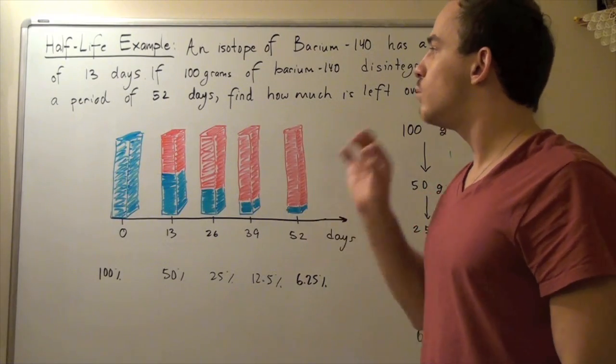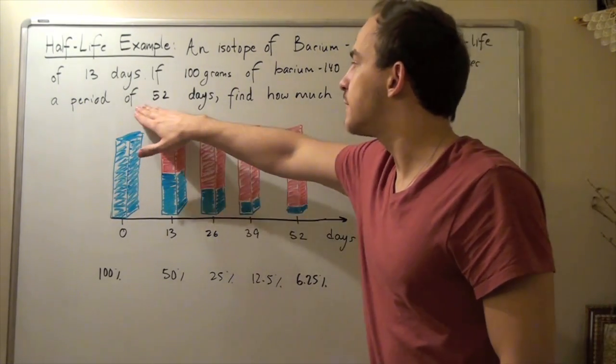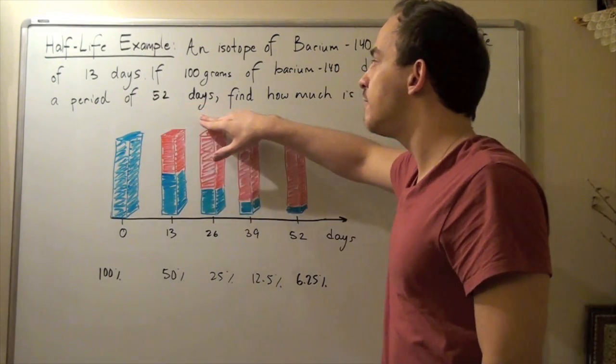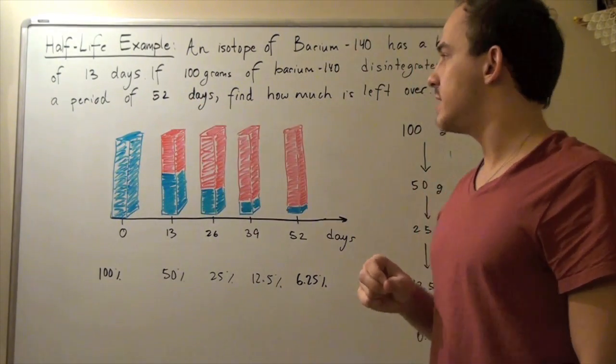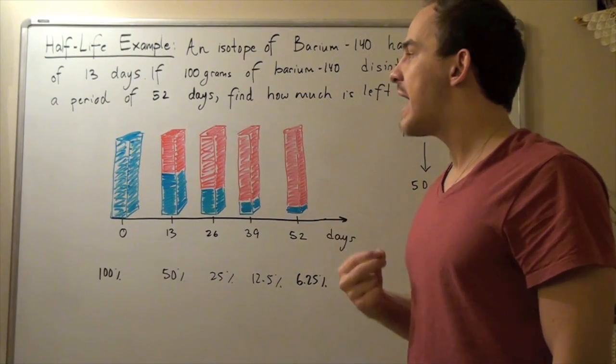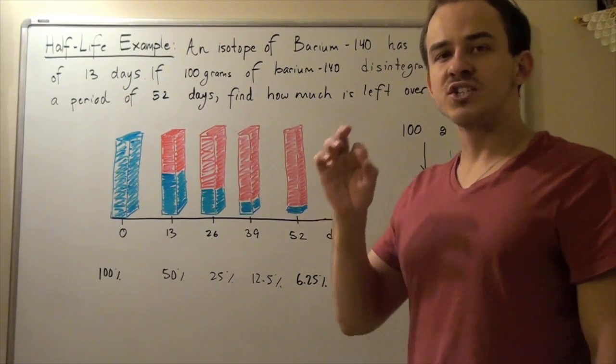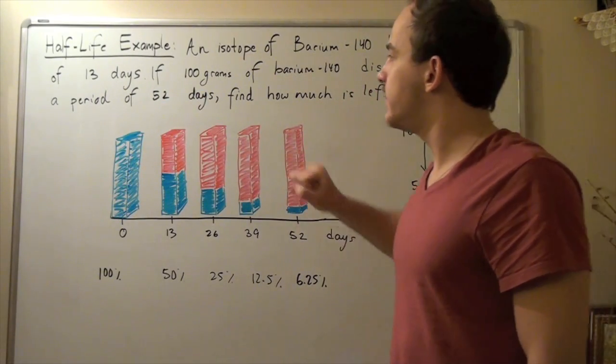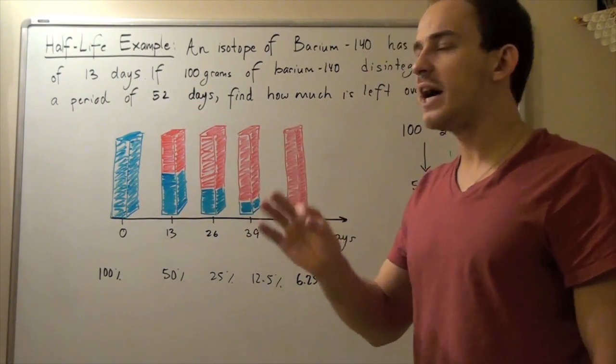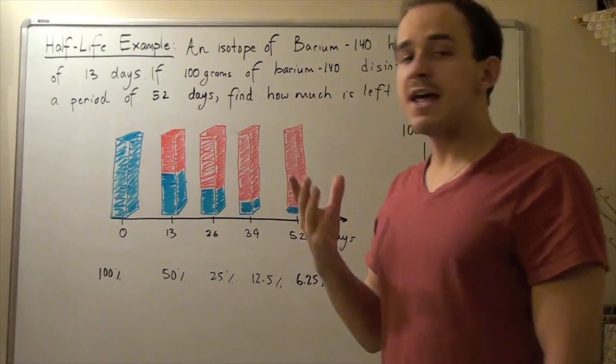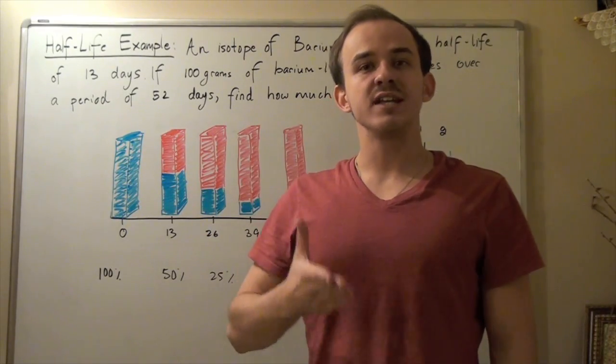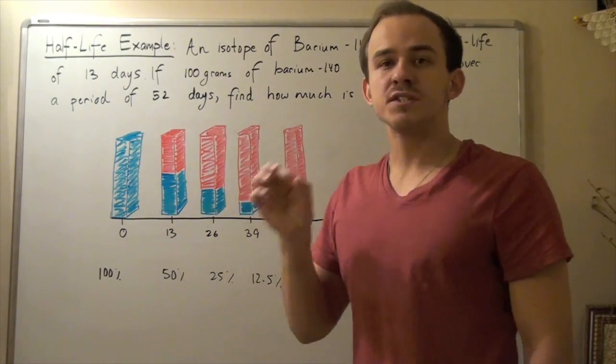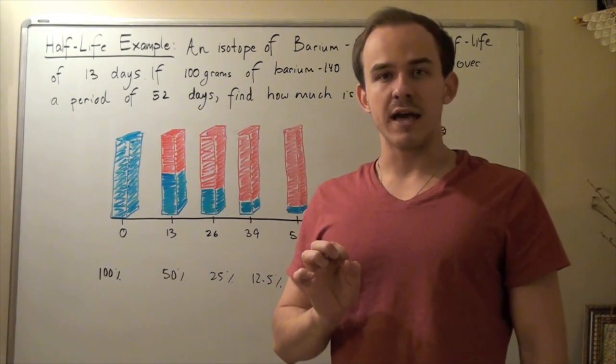So to find what happens or how much we have left over after 52 days, I have to find how many half-lives is 52 days. Note that one half-life is 13 days, so to find the amount of half-lives that 52 days represents, I simply take 52 and divide that by 13. Now 52 divided by 13 is simply 4, and that means this period of time corresponds to 4 half-lives.